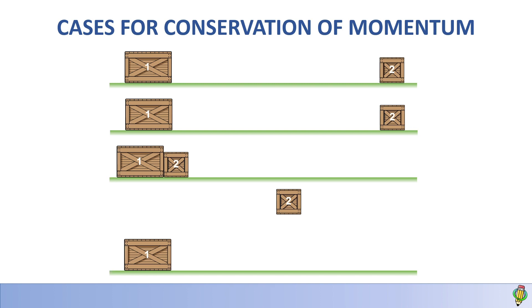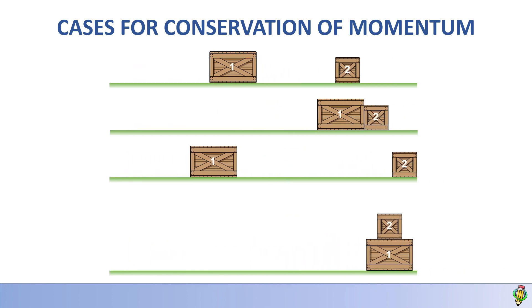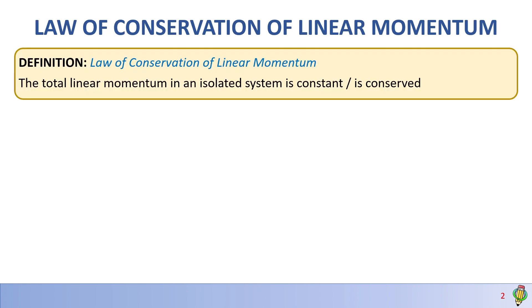Let's talk about the conservation of linear momentum. The law of the conservation of linear momentum states that the total linear momentum in an isolated system is conserved. An isolated system is a system whereby there are no external forces, so in the absence of external forces, the total linear momentum stays the same.